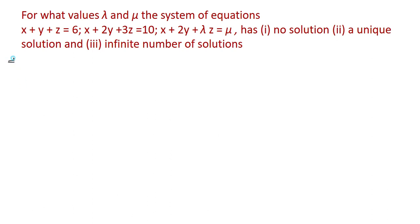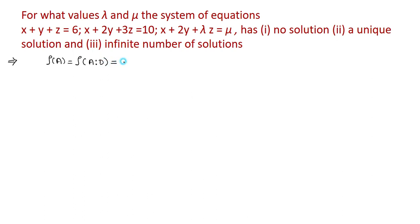Here, given a system of equations, we have to find the values of lambda and mu such that this system of equations has no solution, unique solution, and infinite number of solutions. The system of equations will have a unique solution if the rank of the coefficient matrix is equal to the rank of the augmented matrix, and that is equal to the number of variables.